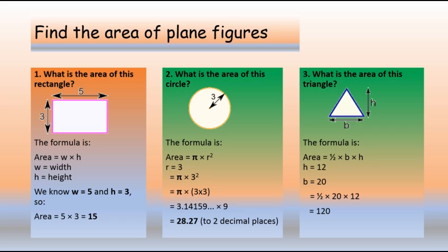The third example tests our knowledge of the areas of plane figures. What is the area of a triangle given that the height is 12 and the base is 20? The area of a triangle is half base times height, therefore half times 20 times 12. Using your calculator, the answer is equal to 120. With this understanding, we can solve any problem that has to do with the area of a plane figure. Once you have the formula, you just insert the values and you get your answer.